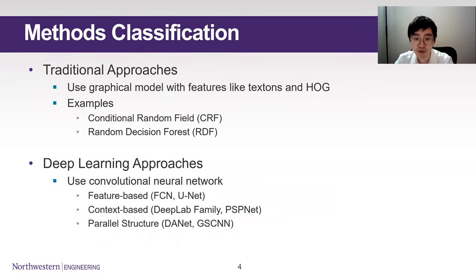There are two main approaches to semantic segmentation on images: traditional methods using graphical models and traditional machine learning algorithms with features, and the other one is the deep learning approach using convolutional neural networks.